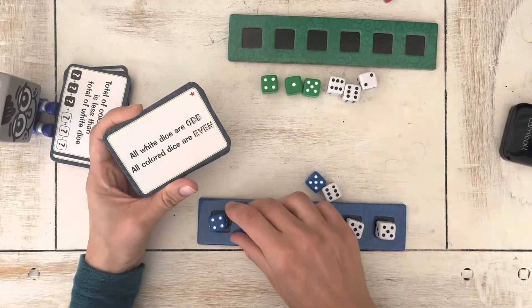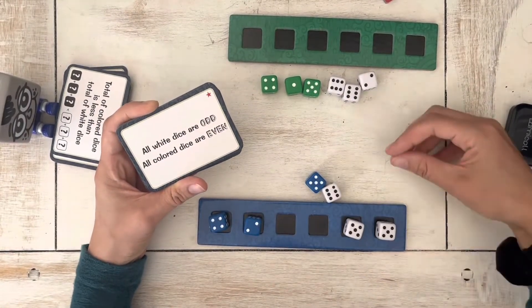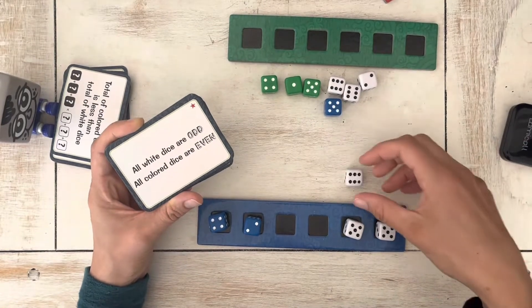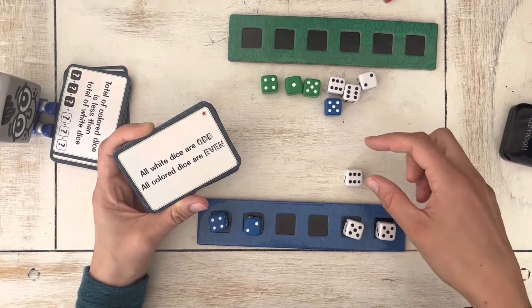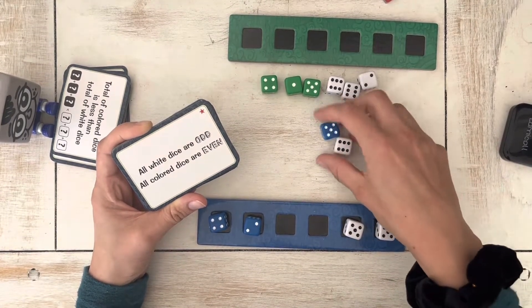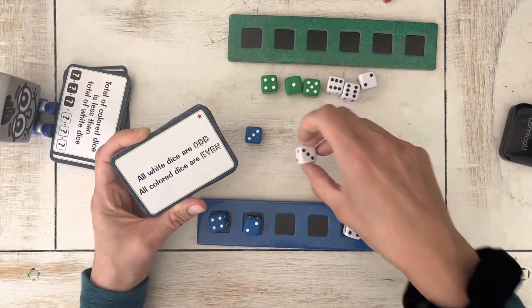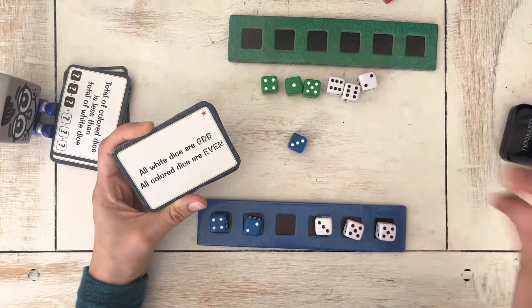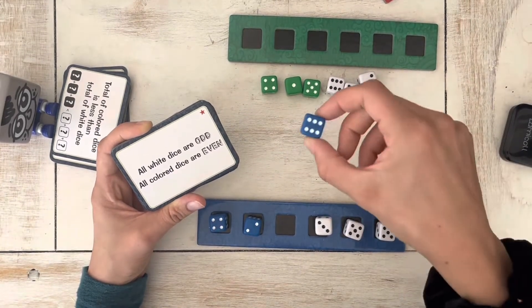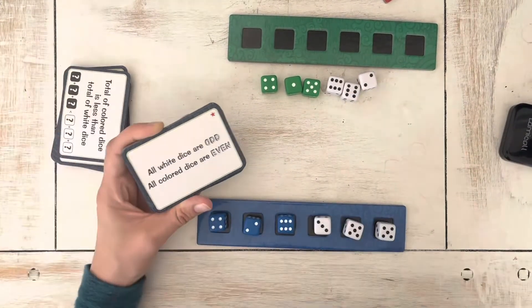So I would put anything I rolled that was colored like that. So we would keep rolling as fast as we could until white dice odd, colored even, white odd, colored even. So I could keep the white odd, keep rolling, keep rolling. Okay, I got an even one.